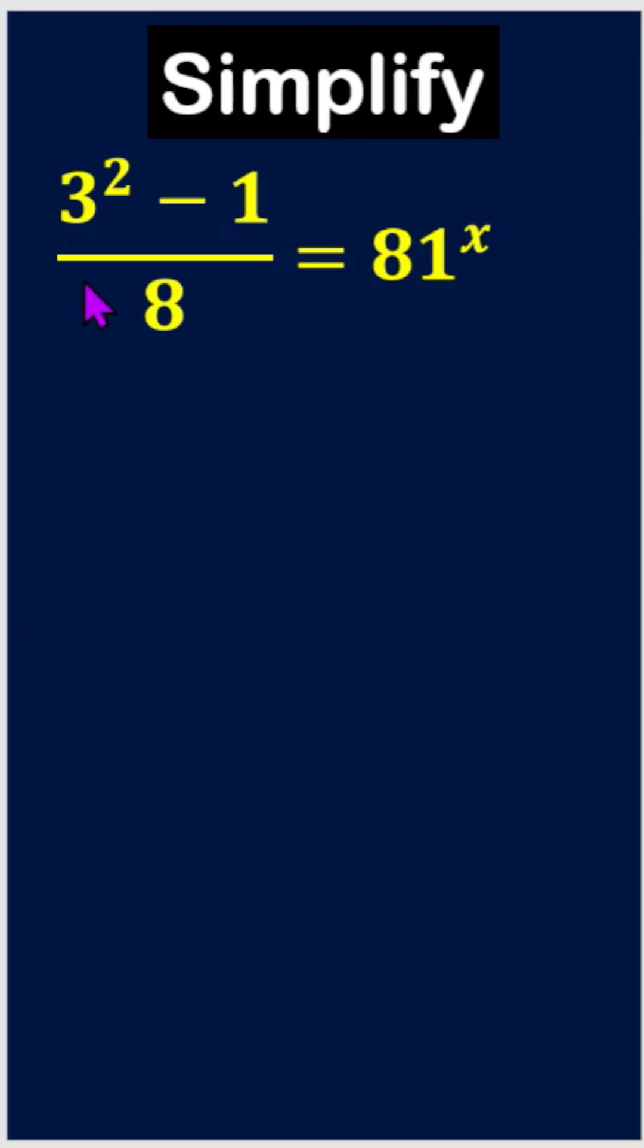Simplify 3 squared minus 1 divided by 8 equals 81 to the power x. We have to find out the value of x.